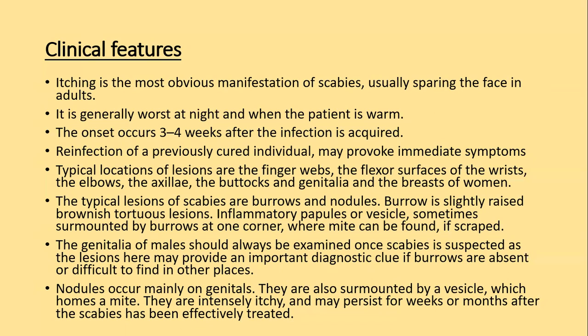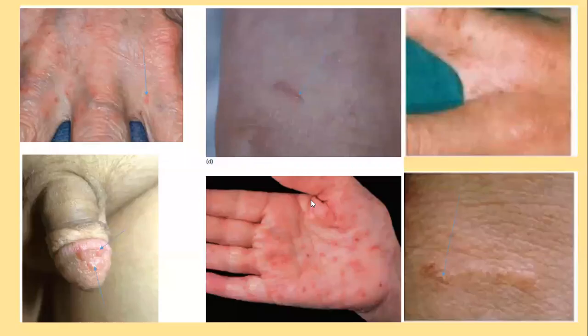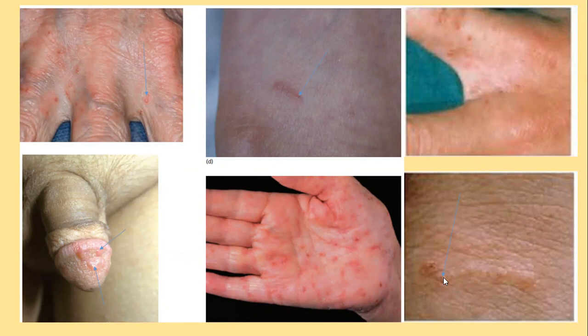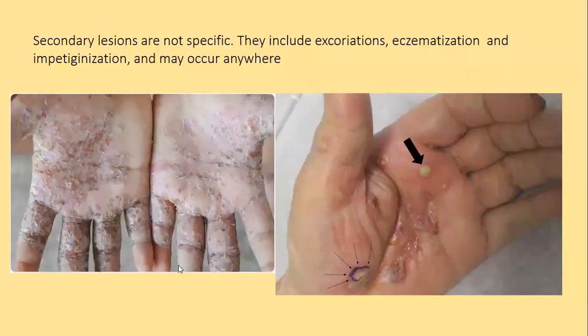The genitals of males should always be examined once scabies is suspected, as lesions here may provide an important diagnostic clue if burrows are absent or difficult to find elsewhere. Nodules occur mainly on the genitals and are also surmounted by a vesicle which houses a mite. They are intensely itchy and persist for weeks or months after scabies has been effectively treated. This image shows burrows and vesicles — these are the places where the mite is found if scraped. After you treat the scabies, the mite is gone but the nodule stays for a longer period of time.